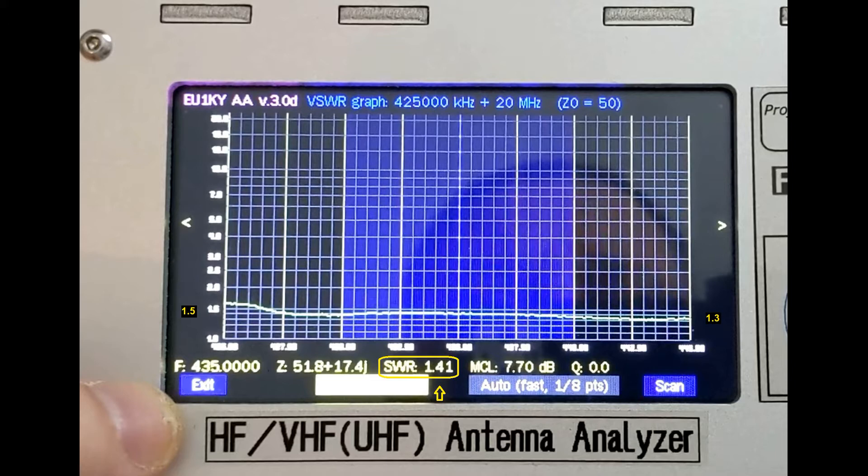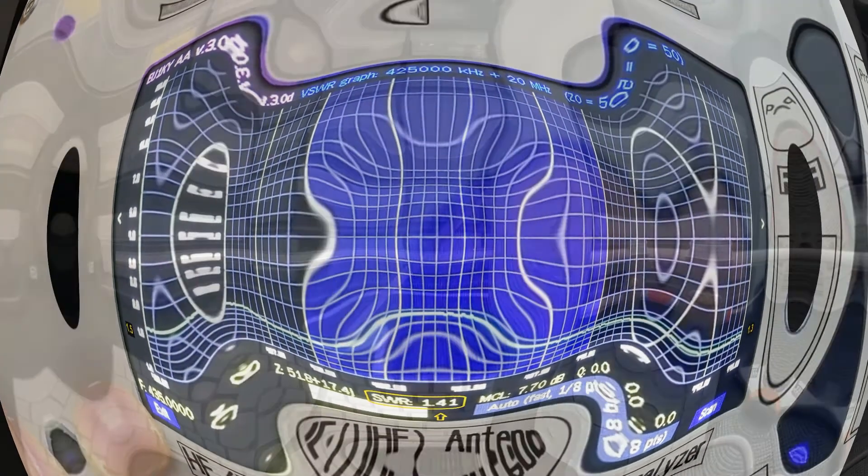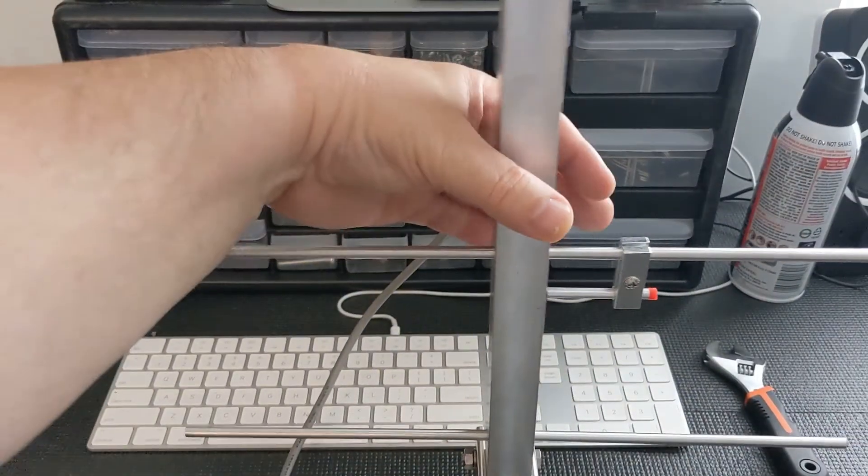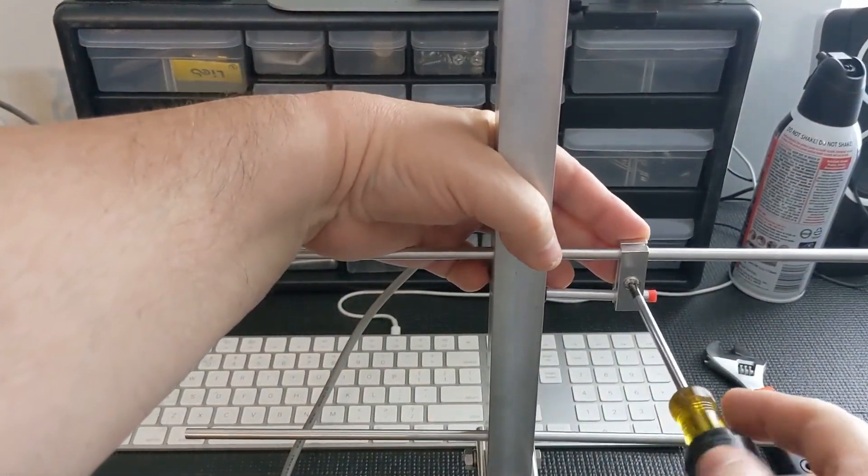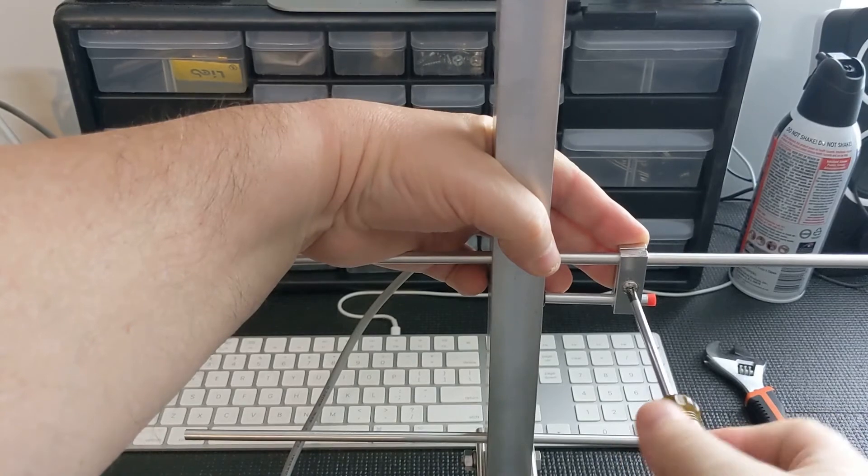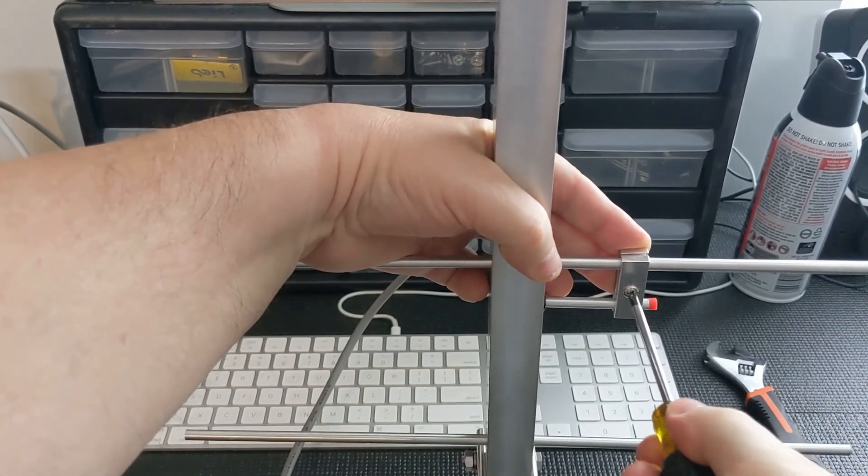This is way better, but I forgot to tighten down the gamma match screw. Since this is electrical, we want a very secure contact, so I'm going to fix that and we're going to redo the scan again. Let's get back to the antenna, tighten down the gamma match adjustment, and then we will do another scan.